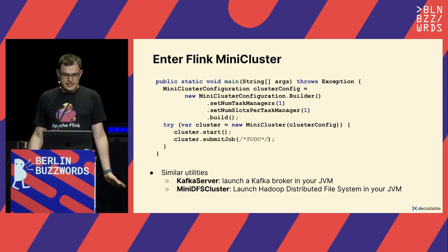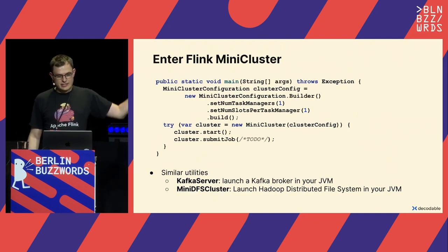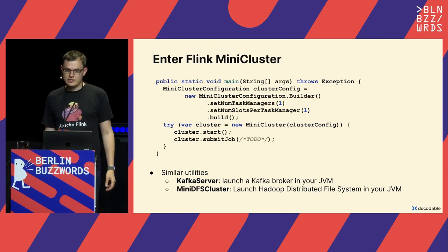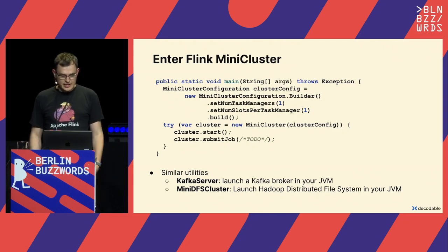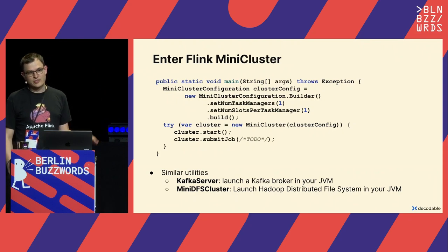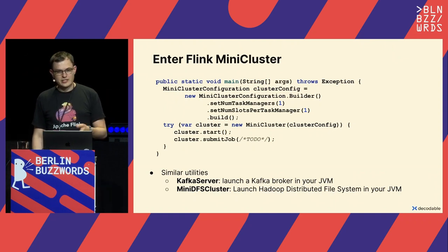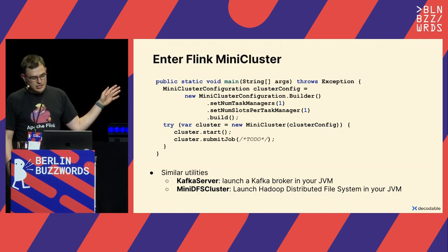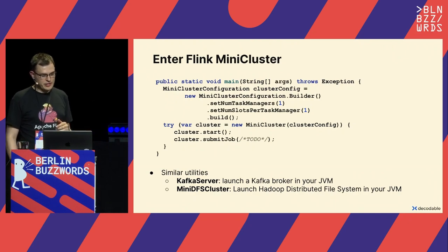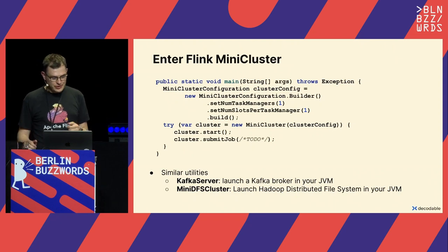To get started with an empty Flink cluster that doesn't run anything, you just need a few lines of code in your main method. This starts all the services you'd also start in a distributed cluster: job manager, task manager, resource manager. The task managers connect to the job manager locally — no network involved.